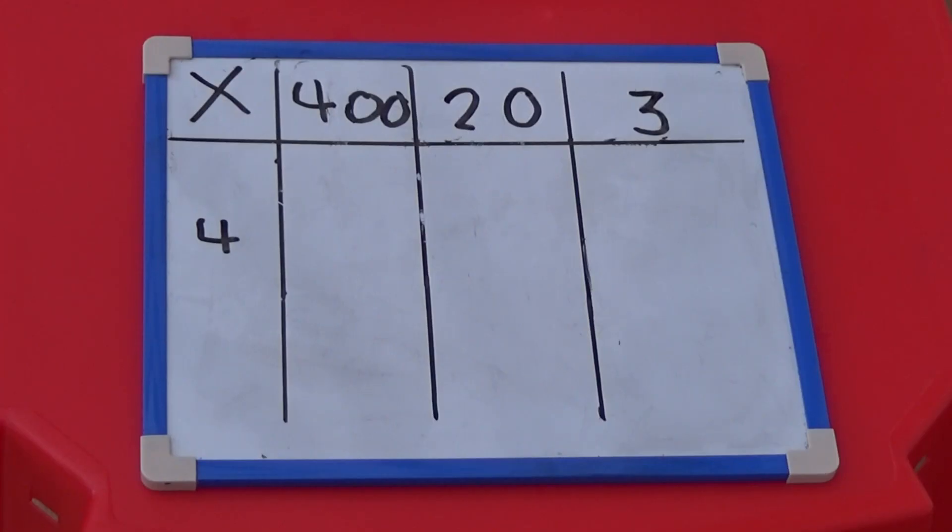Once we can do this with place value counters, we can record it as a picture. I have drawn out the grid and partitioned the 423 into hundreds, tens and ones, and put the 4 underneath again.